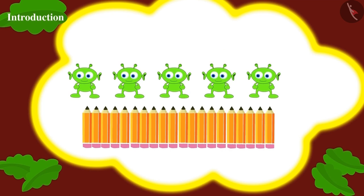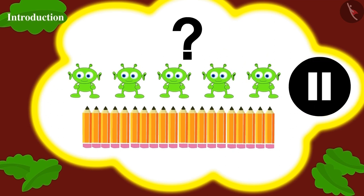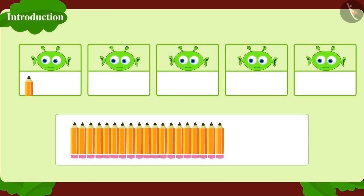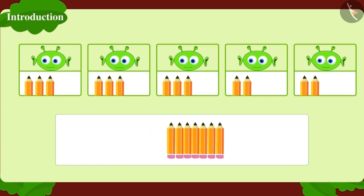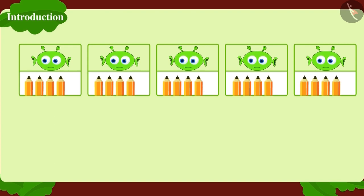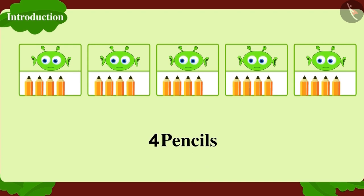Raju asks Bablu how they would distribute these pencils among five of Jeev's friends. Children, can you find the answer? If you want, you can pause the video and find the answer. Well done, children — you have found the right answer! We can divide 20 pencils among five friends, and each friend will get four pencils.